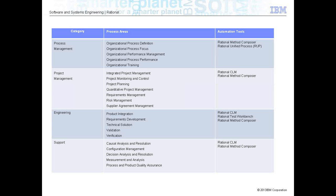Looking at the CMMI categories, the entire process areas are divided into four categories: process management, project management, engineering, and support. These are the four major categories in software engineering process improvement, with around 22 process areas defined across them. CMMI also has maturity levels to measure the capabilities of software delivery processes of each organization: Level 1 Initial, Level 2 Repeatable, Level 3 Defined, Level 4 Managed, and Level 5 Optimized.